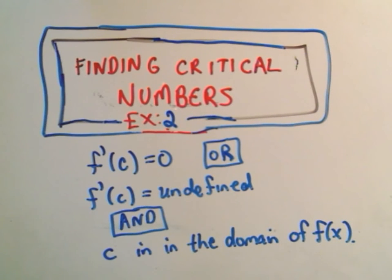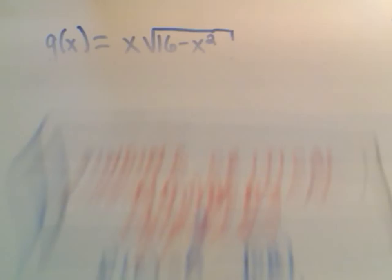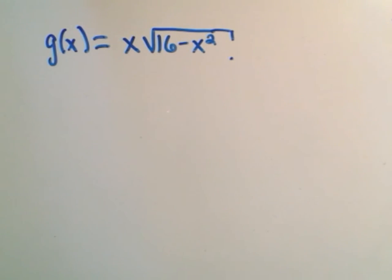Okay, this is going to be another example of finding critical numbers, and this was just the definition of critical numbers that was discussed in the first example. So here we're going to find the critical numbers of x times the square root of 16 minus x squared.